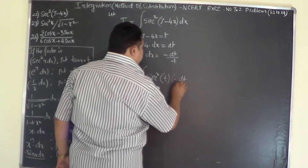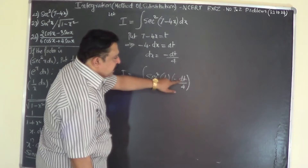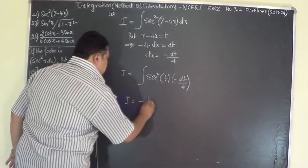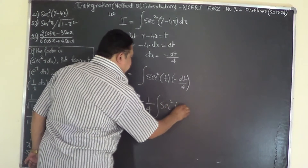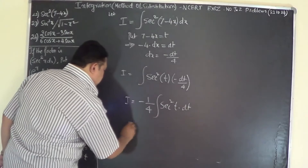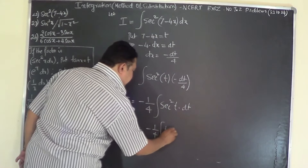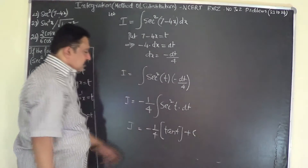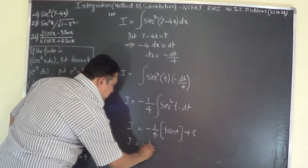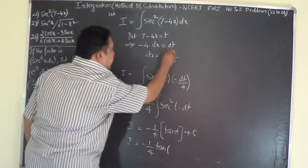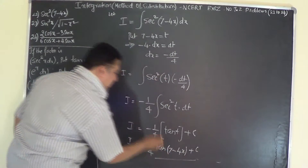Taking -1/4 outside the integral, I = -1/4 × integral of sec²(t) dt. Since the integration of sec²(t) is tan(t), we get I = -1/4 × tan(t) + C. Substituting back, t = 7 - 4x, so the answer is I = -1/4 × tan(7 - 4x) + C.